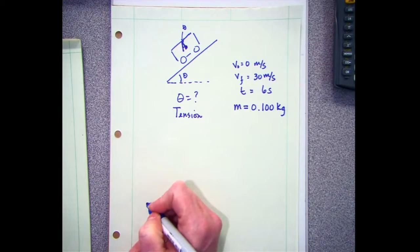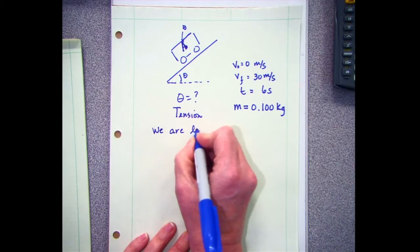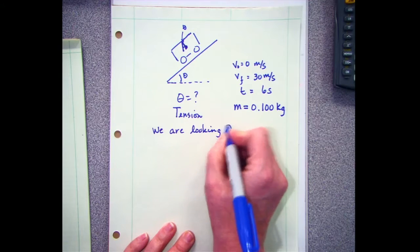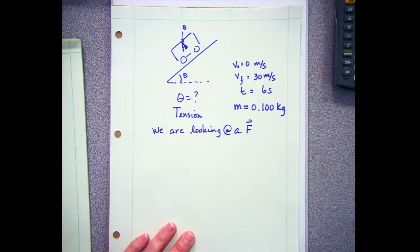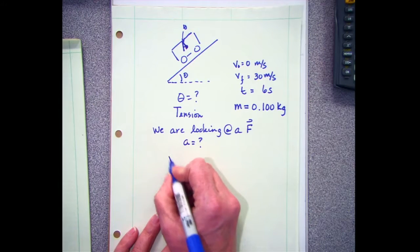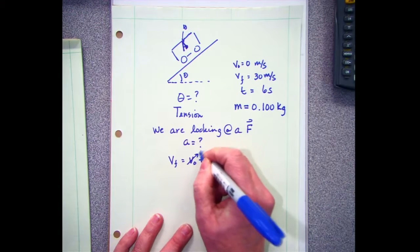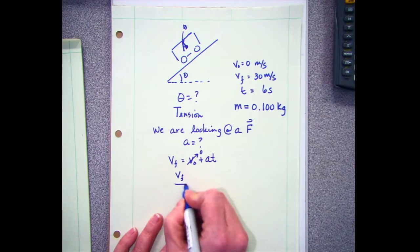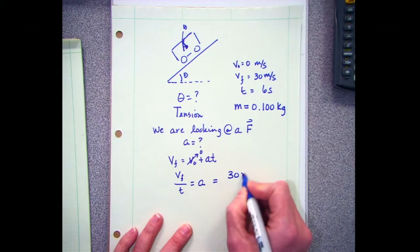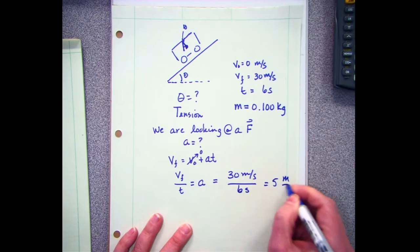The first part of this problem is that we're looking for a force — particularly tension. So we're going to need the acceleration. We've got lots of information that gives us the acceleration. Velocity final equals velocity initial plus acceleration times time. My initial velocity is zero, so I get final divided by time: 30 meters per second divided by six seconds gives me five meters per second squared.